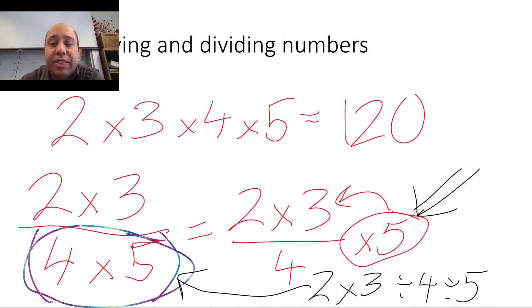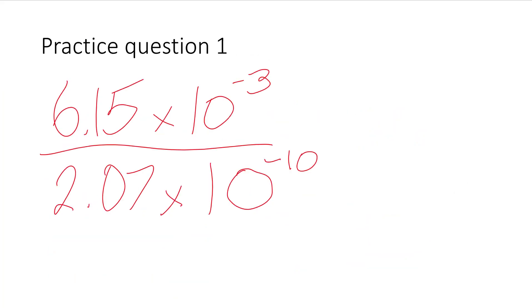You can use parentheses, but there's a better way to do this. I'm going to show you in two examples. So here is the first question to practice: 6.15 times 10 to the negative 3 divided by 2.07 times 10 to the negative 10. If you know how to do this, you can try it out and pause the video. Otherwise, you can keep playing to see how to divide this properly.